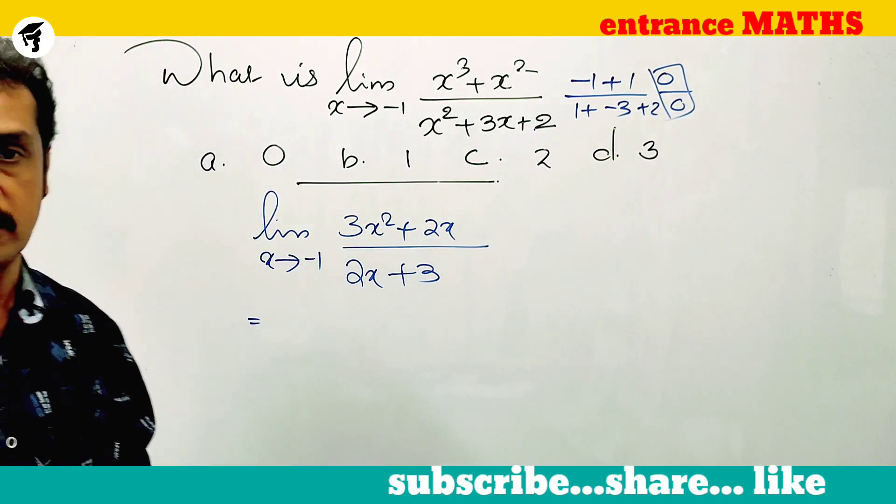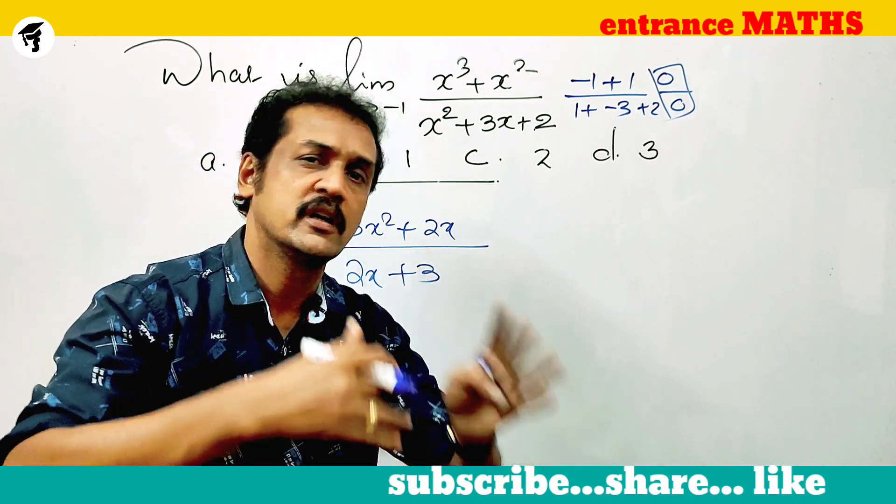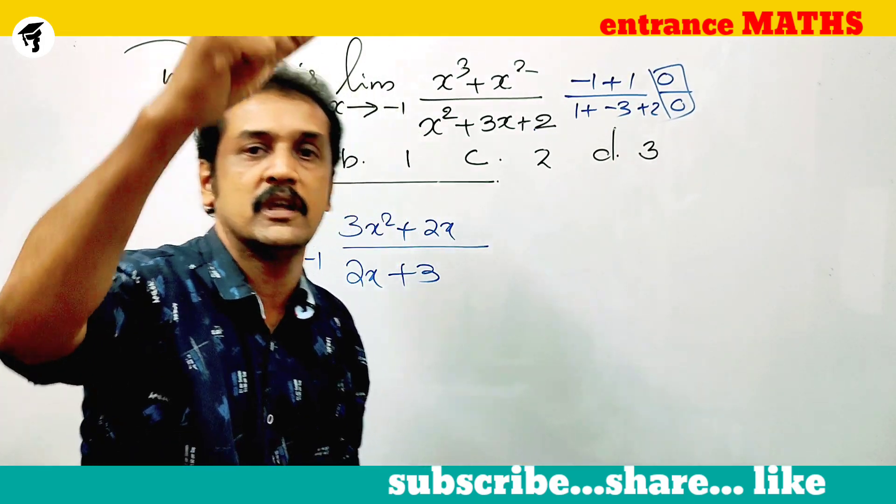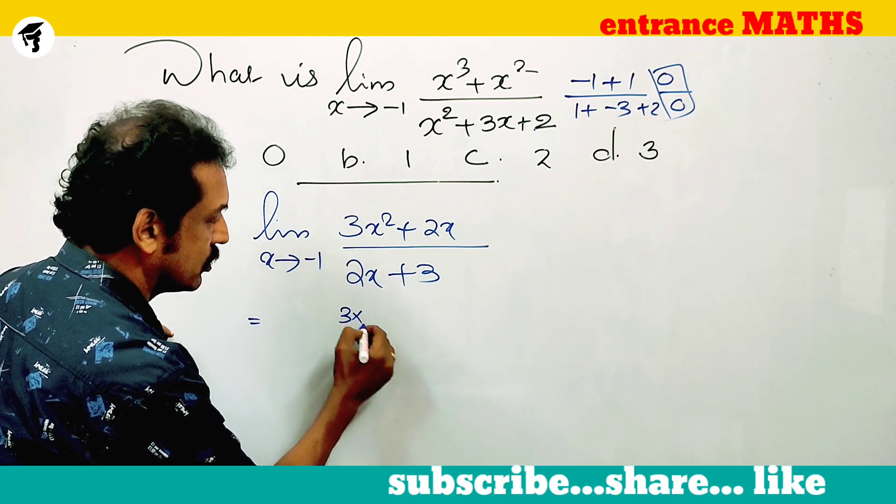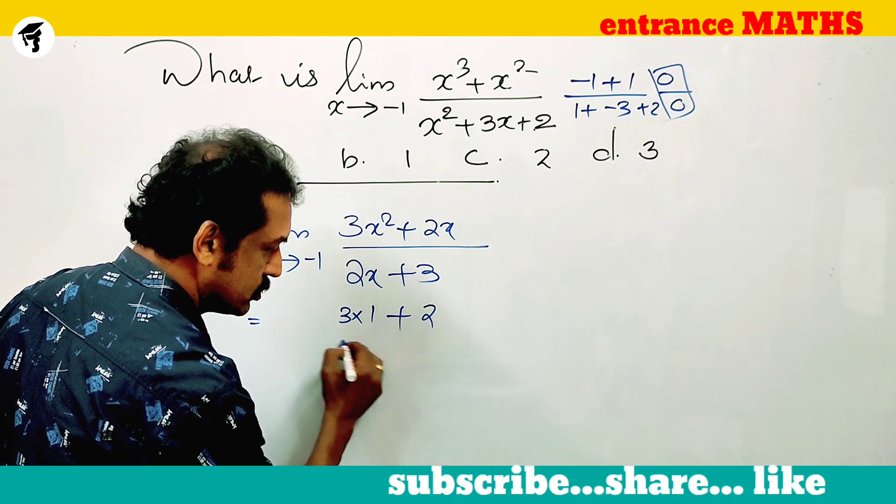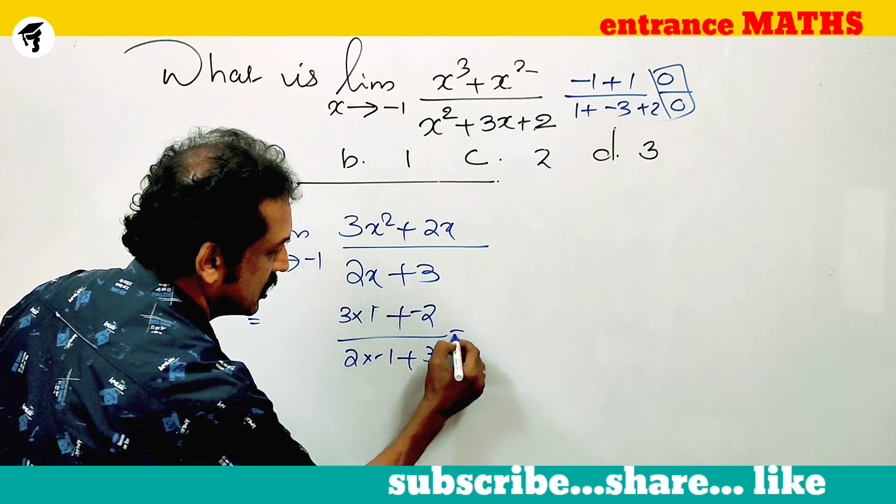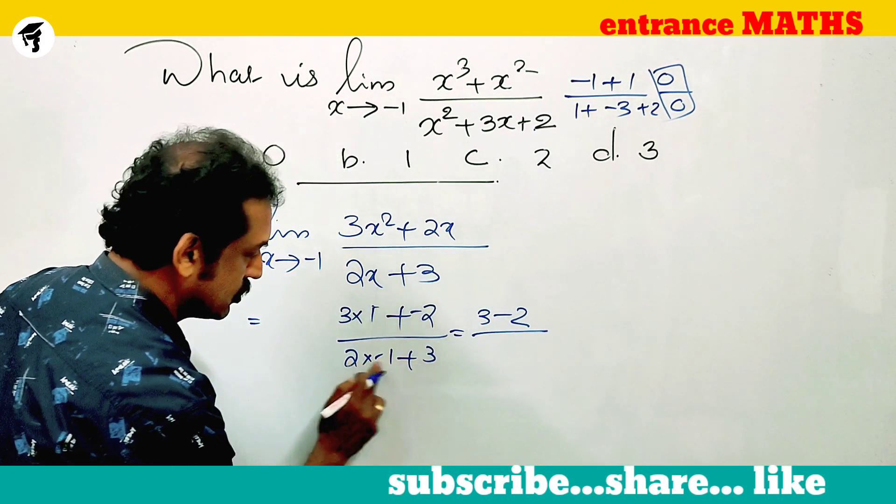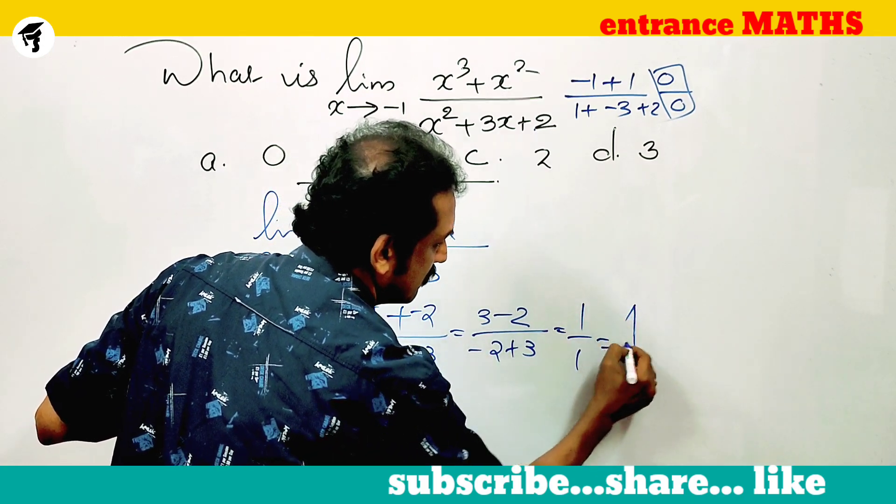This x tends to minus 1. Now the derivative is separated. x equals minus 1. 3 into minus 1 the whole square is 1, plus 2 into minus 1, this is minus 2, by 2 into minus 1 plus 3. That is 3 minus 2 by minus 2 plus 3. That is 1 by 1. Answer is 1.